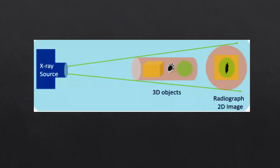This is an image showing how different objects placed at different planes in a three-dimensional object get superimposed when we take a radiograph. Everything will be superimposed over one another and we are not able to clearly identify where each object is located depth-wise. So in order to overcome this we use the localization technique.